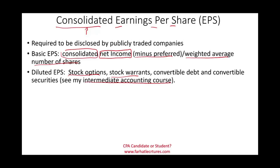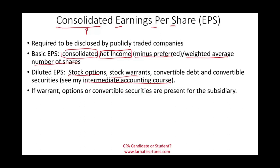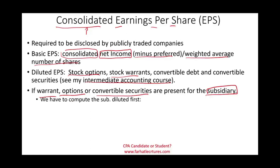For advanced accounting — consolidated earnings per share — what we're adding is the idea that the subsidiary might have some convertible securities, some dilutive securities like options, warrants, convertible bonds, or convertible preferred. When those securities exist, we might have a slight complication or we might have to make certain adjustments. First, we have to compute the sub's diluted EPS first.